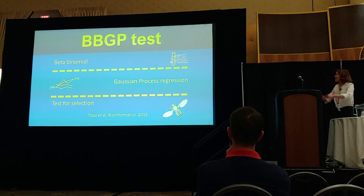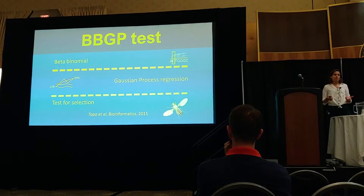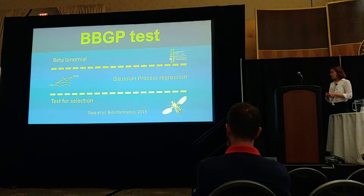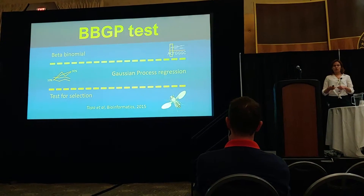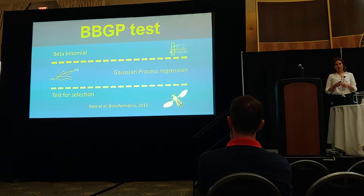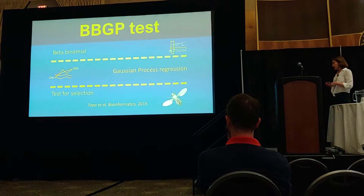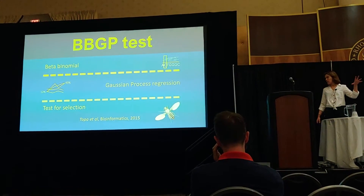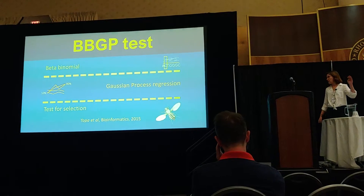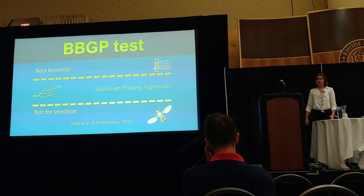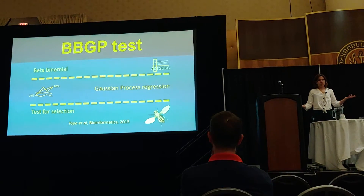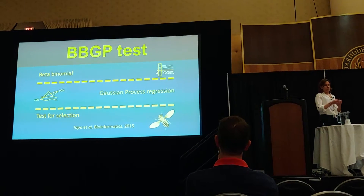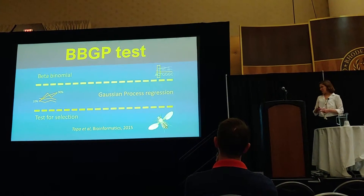So what we've done is developed something that we call the GP test for selection. This is really us just trying to model these observed allele counts using something like a Gaussian process regression model, and we fit a theta prior on these allele frequencies and we test for selection by comparing two different models: a time-independent model, and a selection-like time-dependent model.